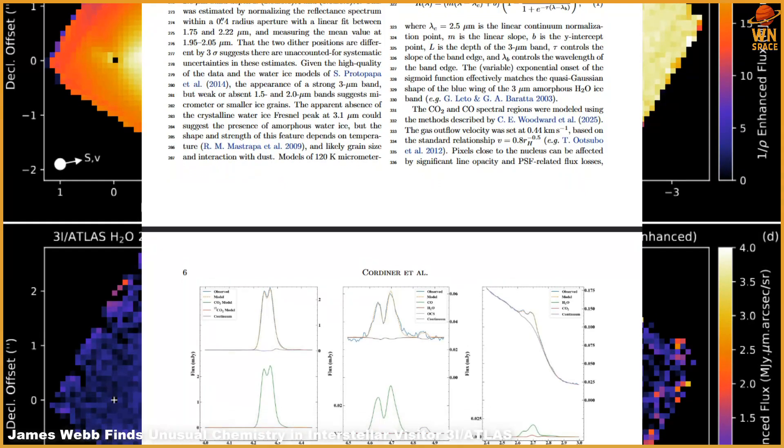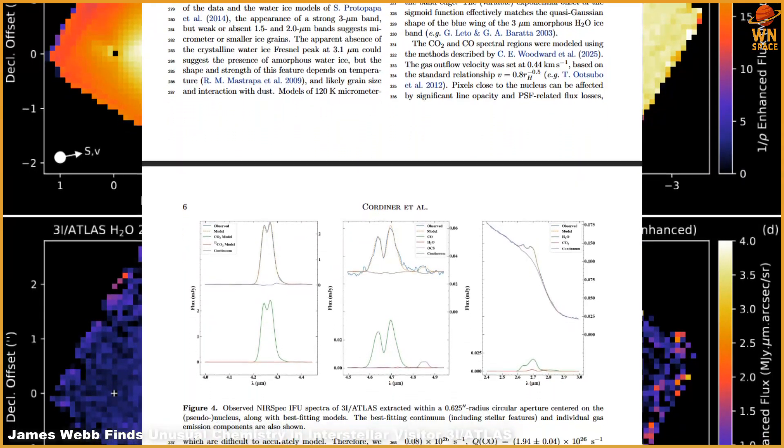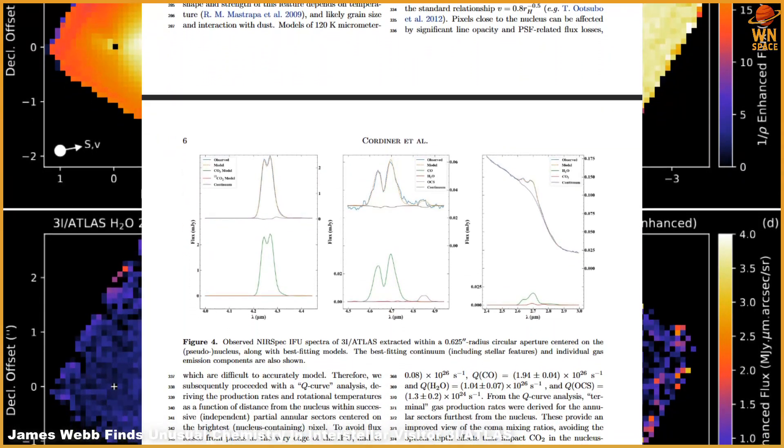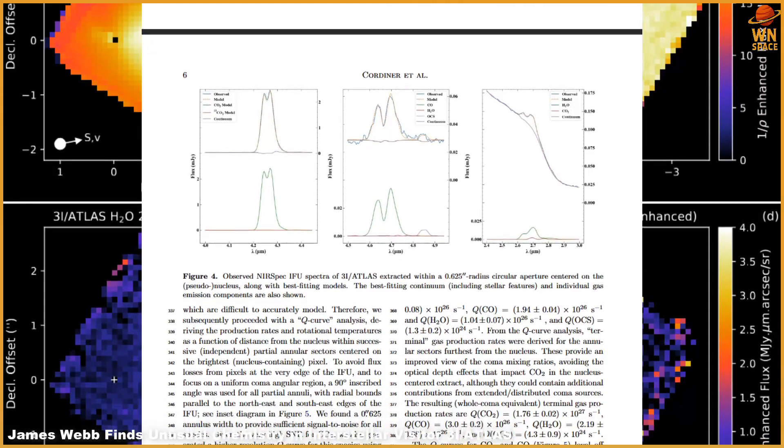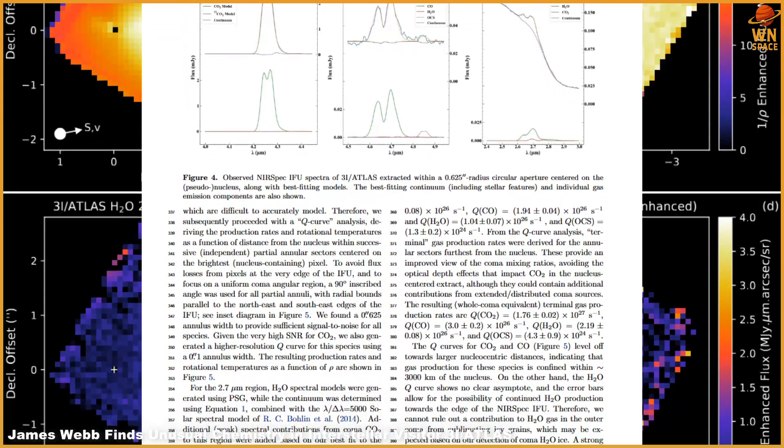The comet will reach its closest point to the Sun, called perihelion, on October 29th, 2025, at about 1.36 astronomical units, roughly the distance between Earth and Mars.